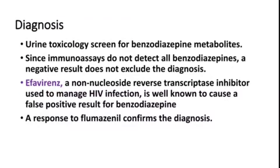To diagnose benzodiazepine overdose, urine toxicology screening is one of the most important steps and should be done from the emergency department. Some immunoassays do not detect all benzodiazepines, so you need to consult with the toxicological analytics lab to confirm whether their batch can pick up all types of benzodiazepines. Additionally, if patients are on efavirenz — a drug used in HIV management — it is well known to produce a false positive result for benzodiazepine on urine screening.